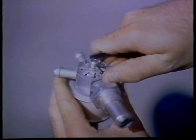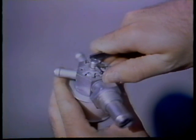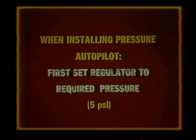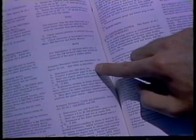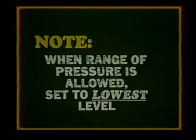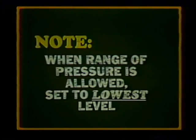To make the initial adjustment on a vacuum regulator, unlock the adjustment screw and turn it clockwise to increase the suction. Set it to the value recommended by the airframe manufacturer and re-lock it. When installing or troubleshooting a pressure autopilot system, first set the regulator to the pressure required for the autopilot. This is usually around 5 pounds per square inch. Then, adjust the gyro instrument regulator to the required pressure. This is usually around 2.7 pounds per square inch, but always use the specifications of the airframe manufacturer. If a range of pressures is allowed, set the regulator to the lowest level. This will aid in maintaining longer service life of the pump.